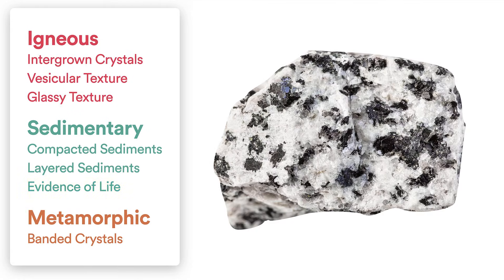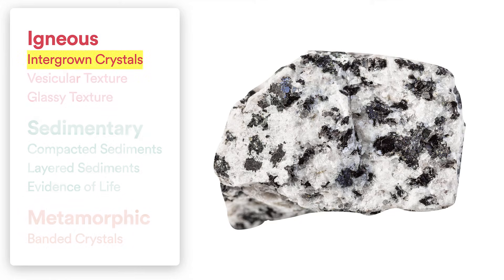Next sample. This might be a little bit tricky, but this is a great example of intergrown crystals. I can see different dark colored crystals, probably the mineral biotite mica, along with lighter colored minerals like quartz. All of the minerals are kind of grown together, and so this must be an igneous rock because of the intergrown crystals.